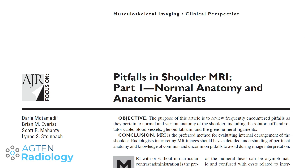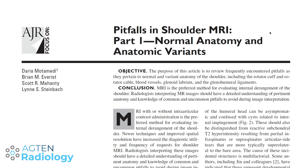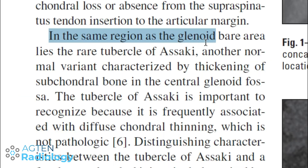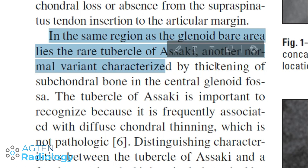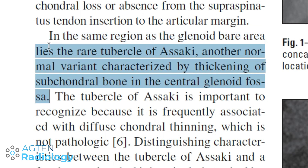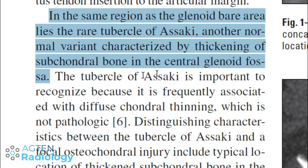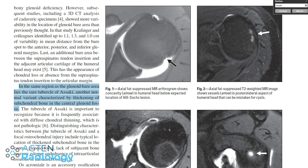Let's quickly have a look at a few papers that deal with this. In the same region as the glenoid bare area — we'll come to that later — lies the rare tubercle of Asaki, another variant characterized by thickening of subchondral bone in the central glenoid fossa. This is exactly what we saw here, and it's certainly important to recognize because it's not a pathology but actually a variant.